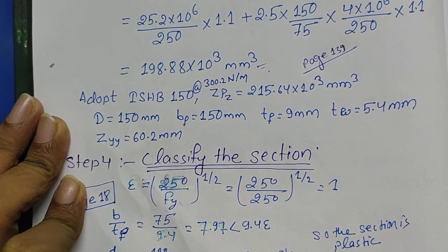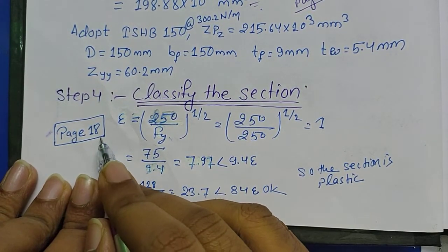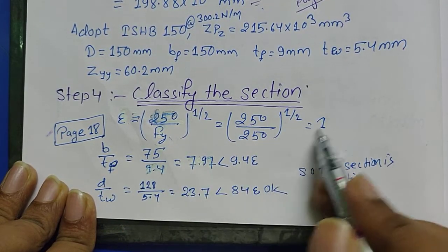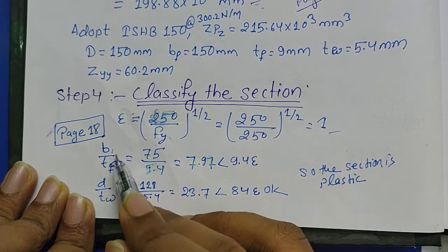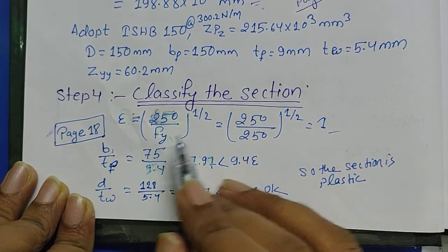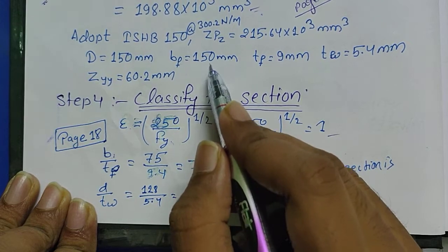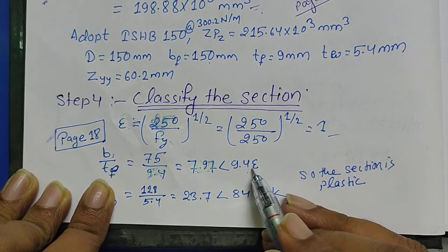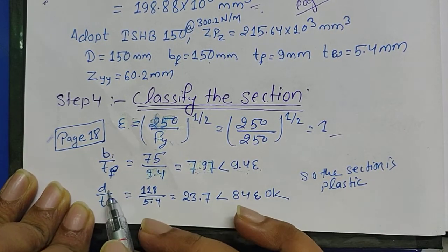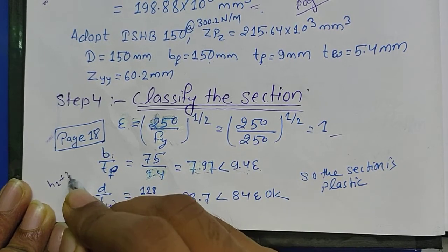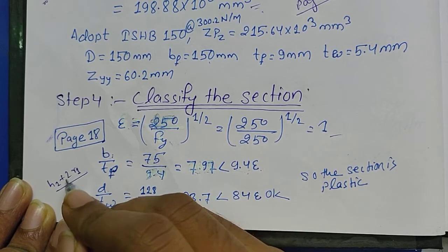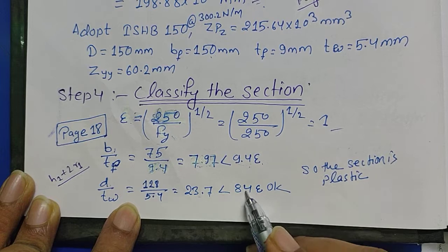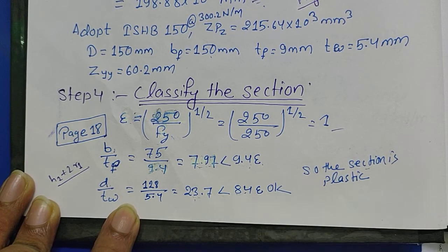Now comes Step 4. In Step 4 we have to classify the section. This is in IS code 800 2007, page number 18, where epsilon root equals 250 by FY. I have calculated value 1. Now I have calculated B by 2TF. While classification of the section, B equals the width of the flange divided by twice of TF. 150 is divided by 2, then here comes 75 divided by 9.7, which is 7.97. This is less than 9.4 epsilon according to code.